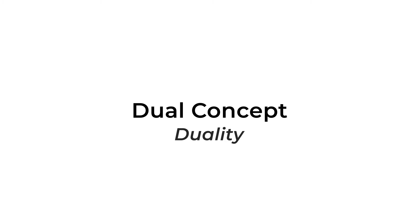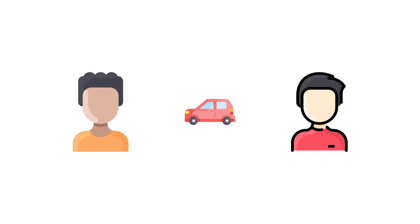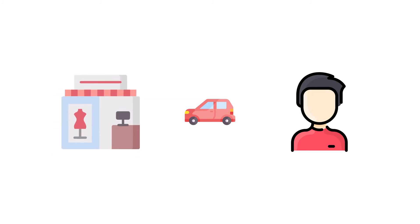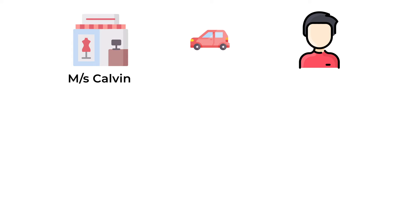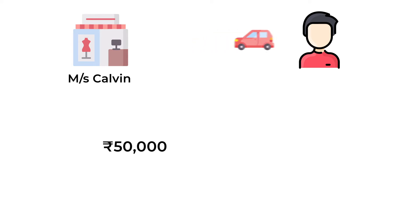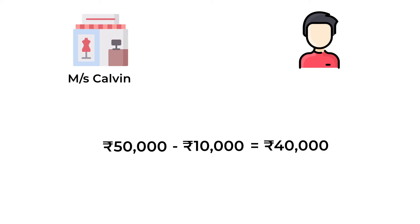Dual concept, also known as duality. Let's take an example to understand it. Suppose you buy a car from your friend for the company. Let's name your company Mrs. Calvin for now. You both have decided on a final price of Rs 50,000. You can take delivery of the car only after you pay at least Rs 10,000 as an initial amount, and the rest Rs 40,000 can be paid later.